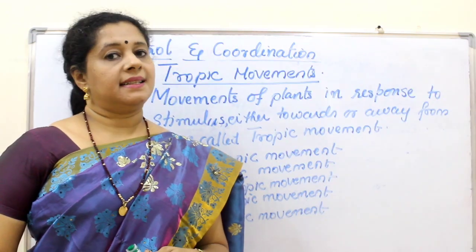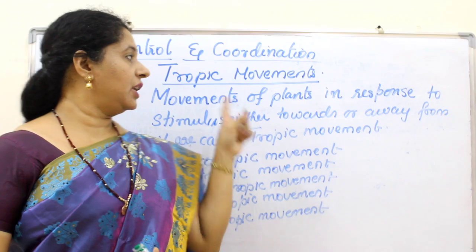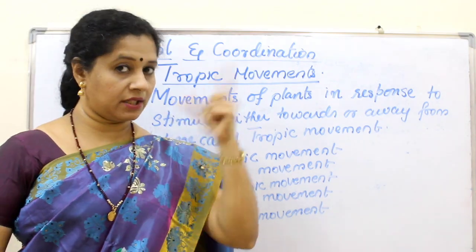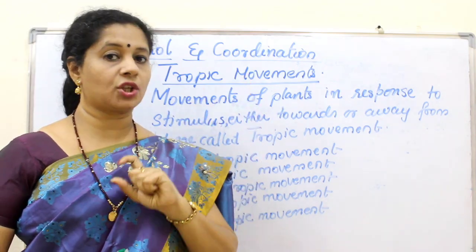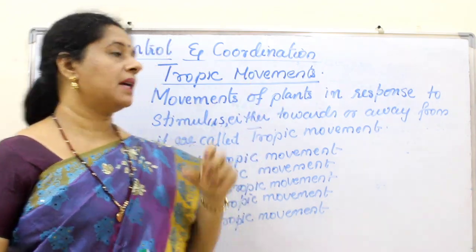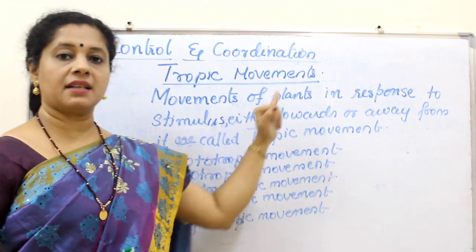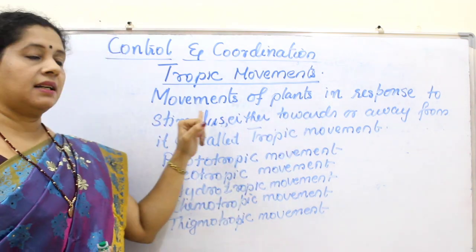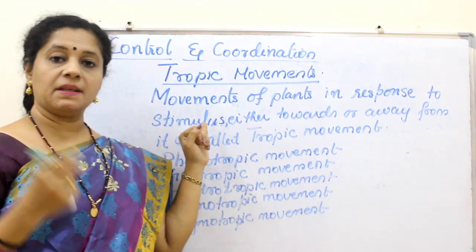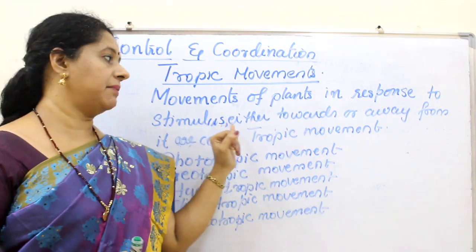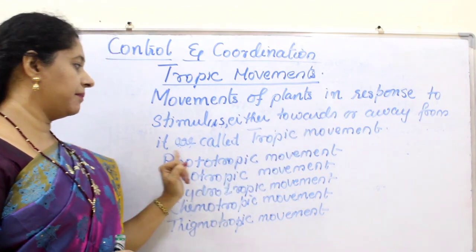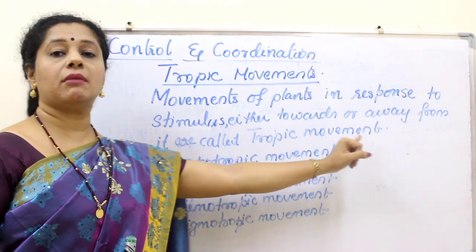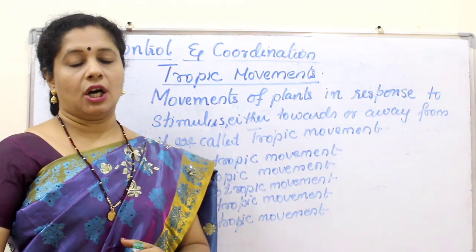Now let us learn the definition of tropic movement. Note that it is not 'trophic' — trophic refers to nutrition. This is 'tropic.' Movements of plants in response to a stimulus from the environment, either towards or away from it, are called tropic movements.